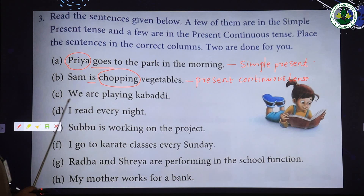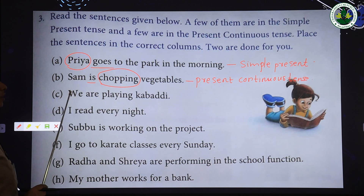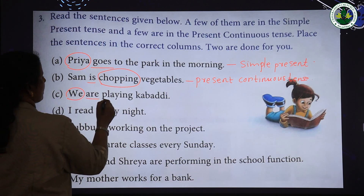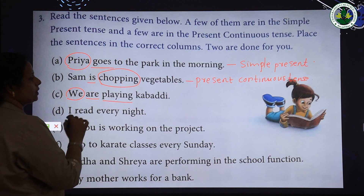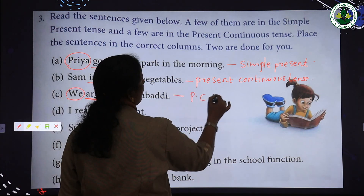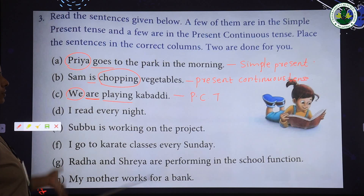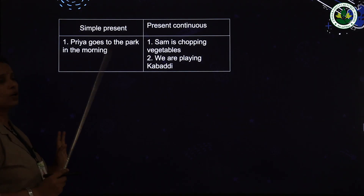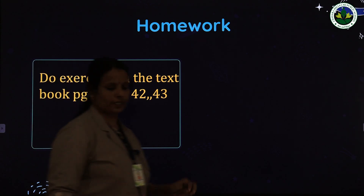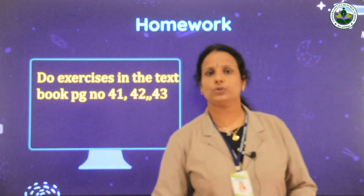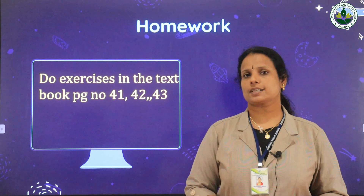Example three: 'We are playing kabaddi.' The pronoun 'we' is plural, so 'are' is used, and 'playing' has the 'ing' form — so it is present continuous tense. Check each sentence for the 'ing' form and action word to identify the tense. Homework: complete all exercises on pages 41, 42, and 43 in your textbook. Today's class is over, thank you.